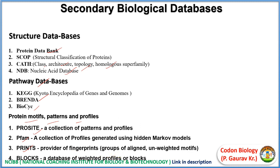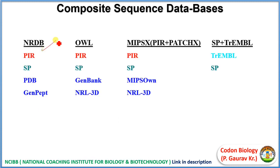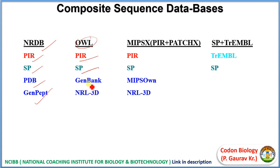Composite databases include NRDB, which contains PIR, SP, PDB, and GenPept. OWL contains PIR, SP, GenBank, and NRL-3D. These are different resources providing composite sequence databases.